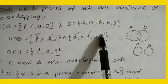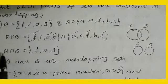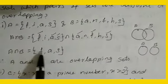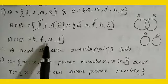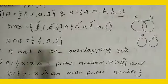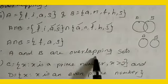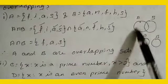See here now, A intersection B = {f, a, s}. There are three common elements. So A and B are overlapping sets because these are common.